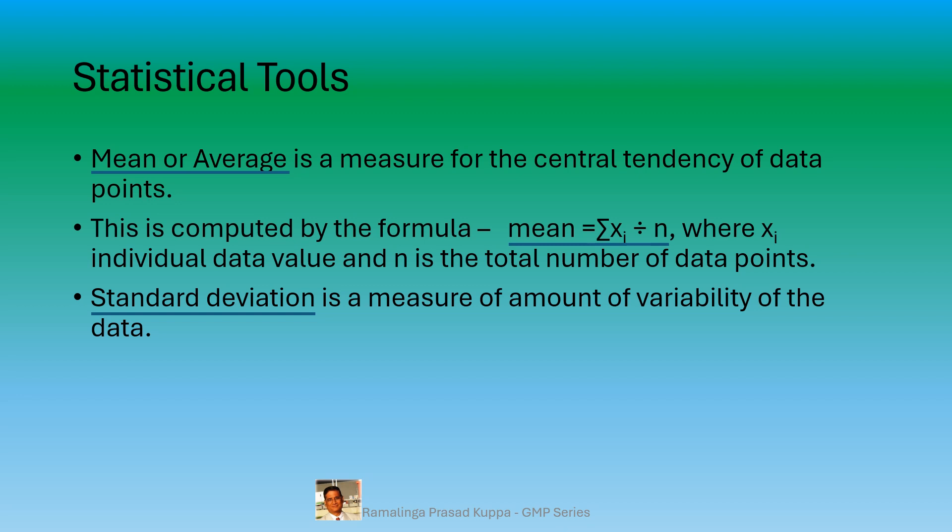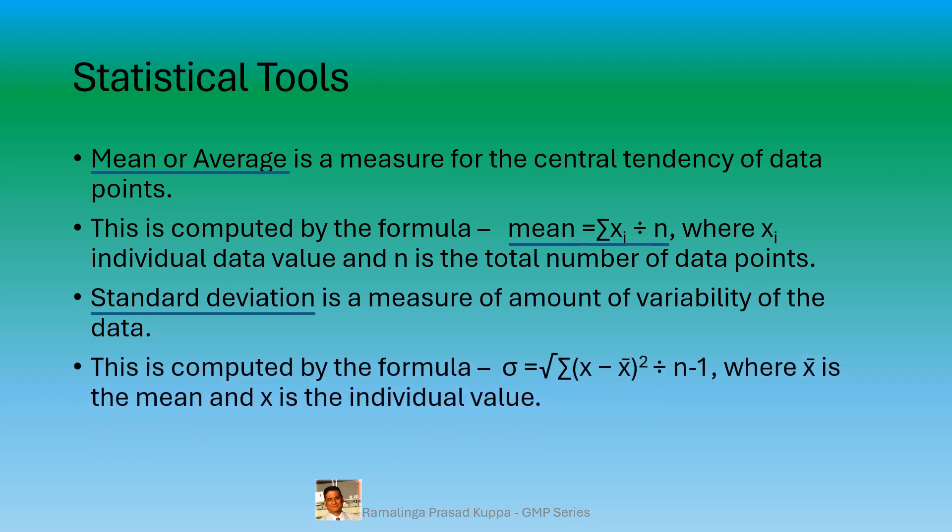When standard deviation is multiplied by 100 and divided by the average value, you get percent standard deviation, also called RSD. This is computed by the formula: sigma equals the square root of the sum of (xi minus x-bar) squared, divided by n minus 1. Lower RSD values indicate lesser variance, and higher RSD values indicate more variance, meaning greater data spread over the central value. You don't need to calculate manually — Excel can do this in a fraction of a second.